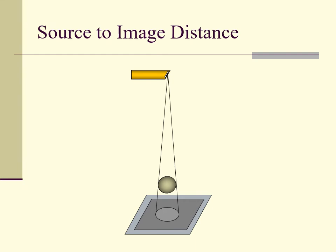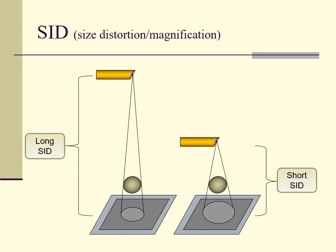Source-to-image distance can also affect magnification. A long source-to-image distance will cause less magnification than will a short source-to-image distance. As the anode inside the x-ray tube moves closer to the image receptor, the sphere is magnified more. Source-to-image distance also affects magnification, but with the opposite change in magnitude. As SID becomes smaller, the magnification of the object becomes less. As OID becomes smaller, the magnification of the object becomes greater.